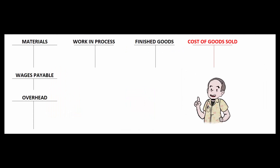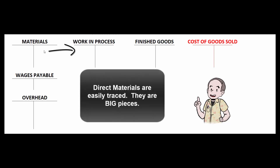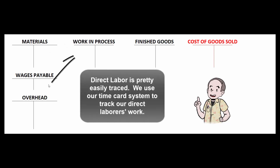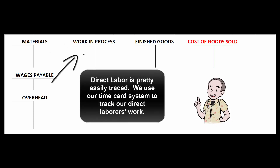When figuring out how much it costs to make our stuff, it's pretty easy to track direct materials — those are big pieces, and we may have a system where workers sign out materials from a supervisor in charge of raw materials. It's also easy to keep track of wages on each job because employees fill out time cards every day telling us which jobs they worked on.